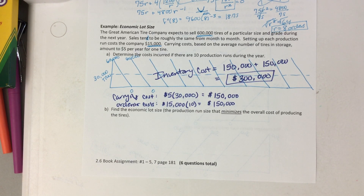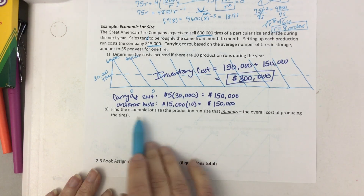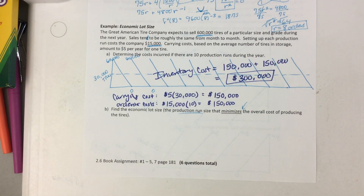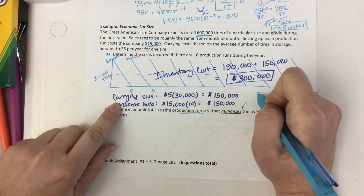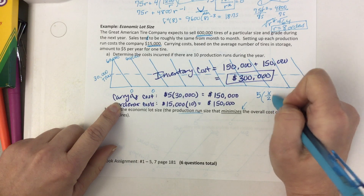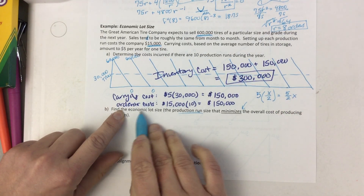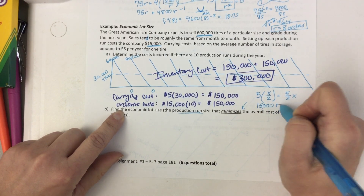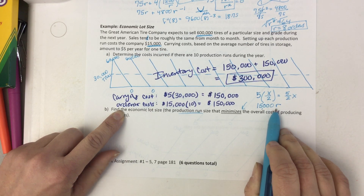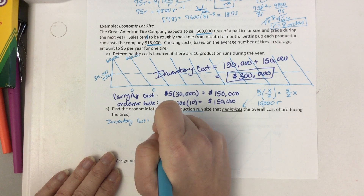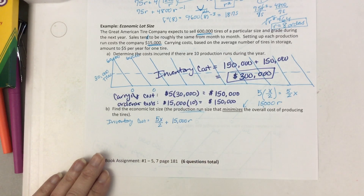Obviously they want to be smart about this, because $300,000 is a lot of money. So we are going to find the economic lot size — the production run size that minimizes overall inventory costs. Carrying costs: $5 times X/2 = (5/2)X. Ordering costs: $15,000 times R. So our inventory cost function to minimize is: (5/2)X + 15,000R. We also have our constraint: R times X = 600,000.